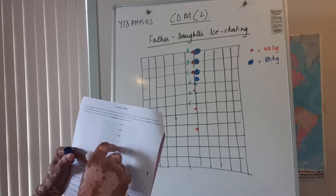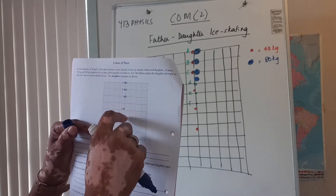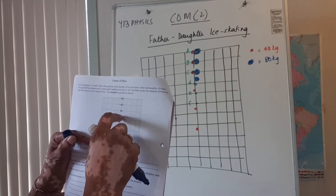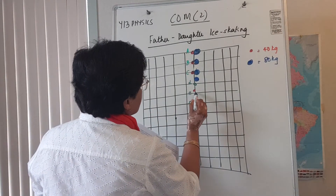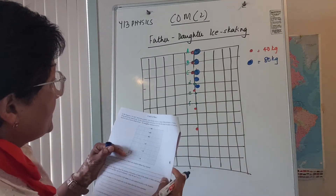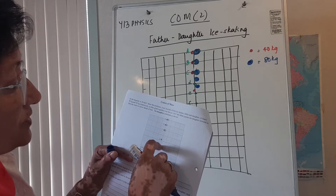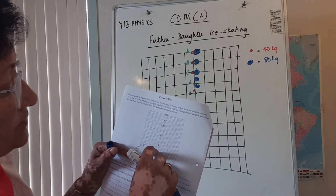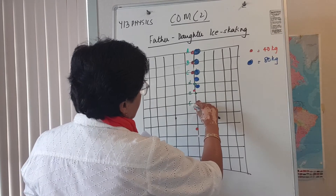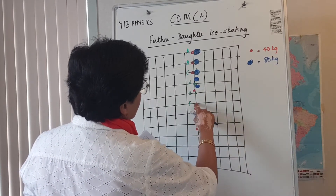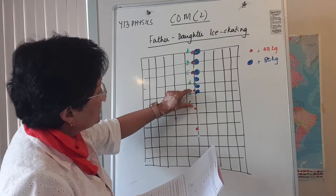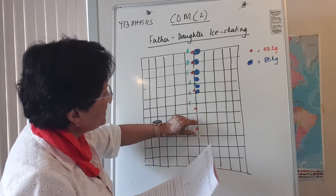At position d the daughter is four squares in front, so the father is two squares behind, because the father's mass is double the daughter's mass. At position e the daughter is eight squares in front, so the father will be four behind — somewhere over here. At position f the daughter is twelve squares in front, so the father is going to be six behind. You can figure out the daughter is moving nine little squares each second, and the father will be proportionally behind.